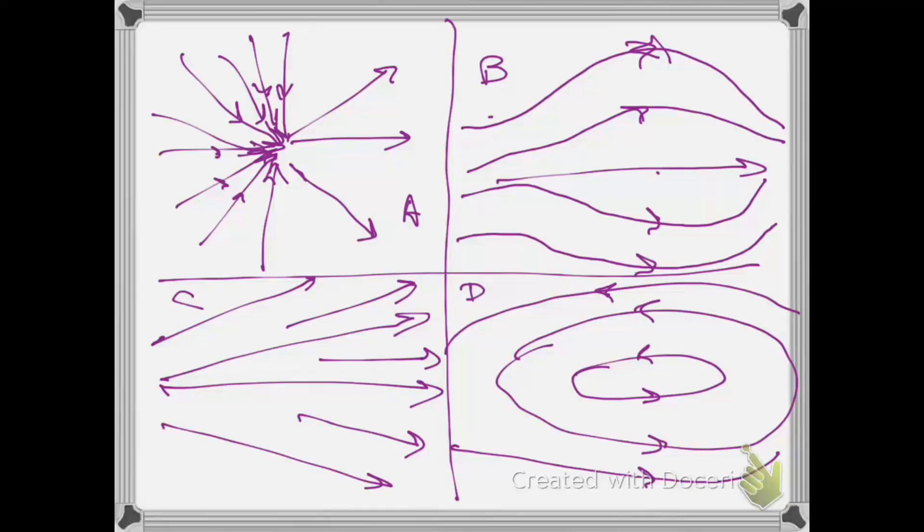The correct answer is, drum roll please. B. Electric fields must start on plus charges and finish on minus charges. And assuming that there are no charges in the picture shown, each of A, D, and C have field lines that both start and terminate within the box. So these field lines don't even start and terminate on anything. They start and terminate on themselves.